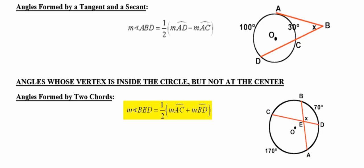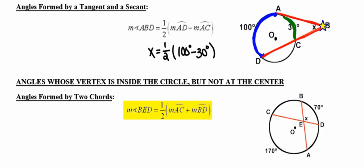For an angle formed by a tangent and a secant, the location of the vertex is again outside the circle. The degree measure of the angle is half the difference of the two intercepted arcs. Looking at points A and D, the blue arc is 100 degrees and the green arc is 30 degrees, so X is equal to half of 100 minus 30, which gives 35 degrees.